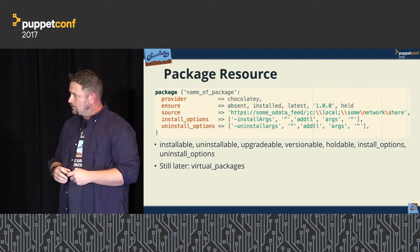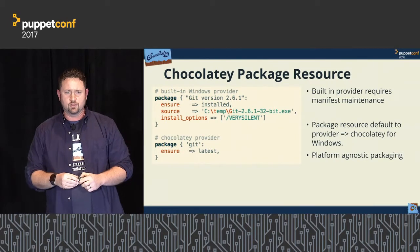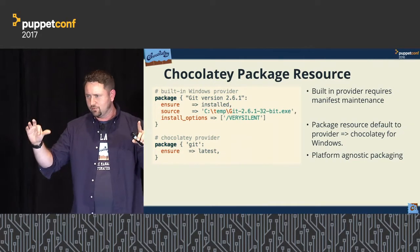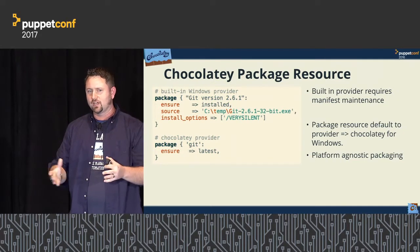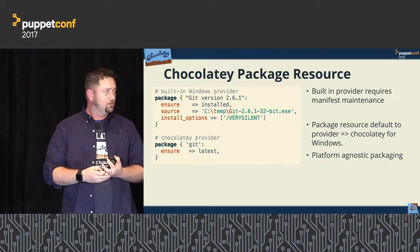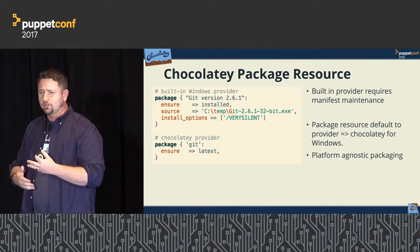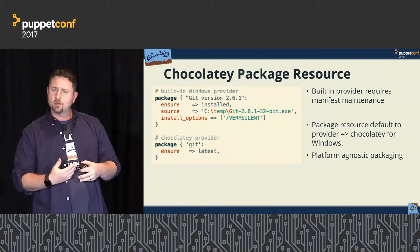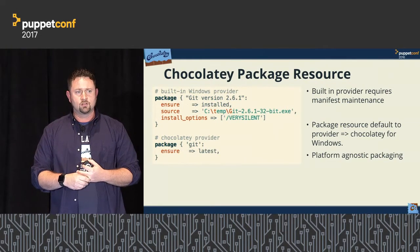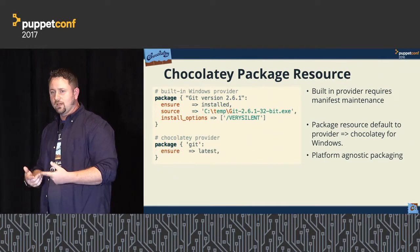Install options, uninstall options, all that good stuff. The built-in package resource — when using something like Git, that name has the version in it and must match exactly what's in programs and features, causing issues upgrading over time. The Chocolatey package resource is platform-agnostic — you can use that same resource for Debian or RHEL as long as the package name matches. For the Chocolatey source resource, you'd disable the community repository and bring in your own internal repositories.